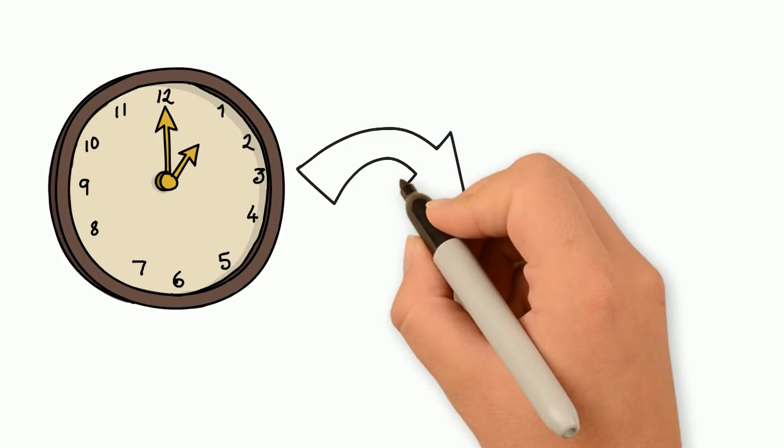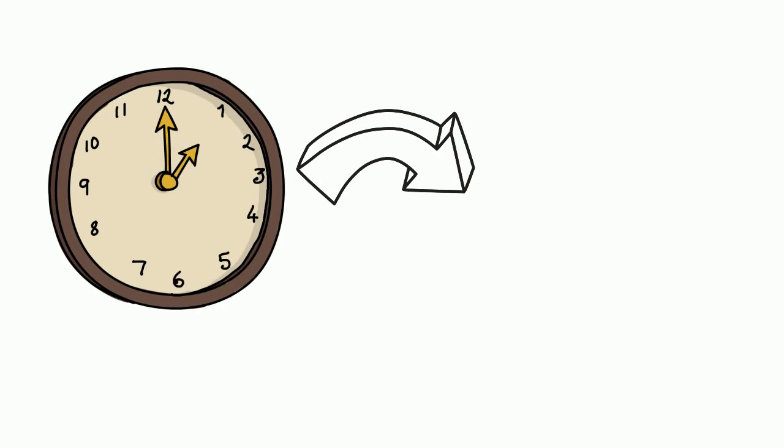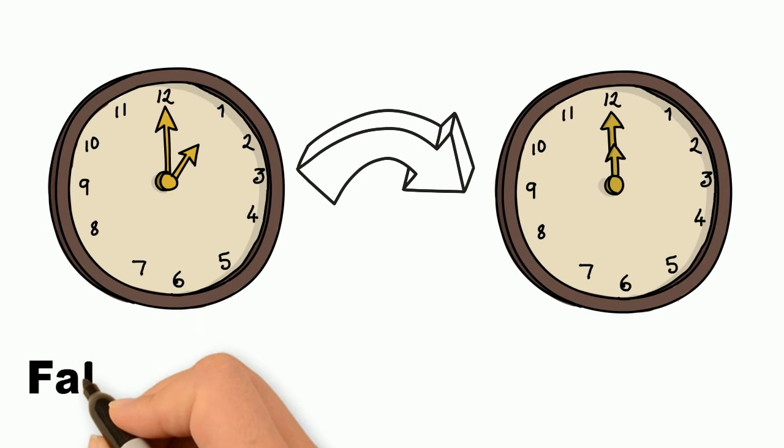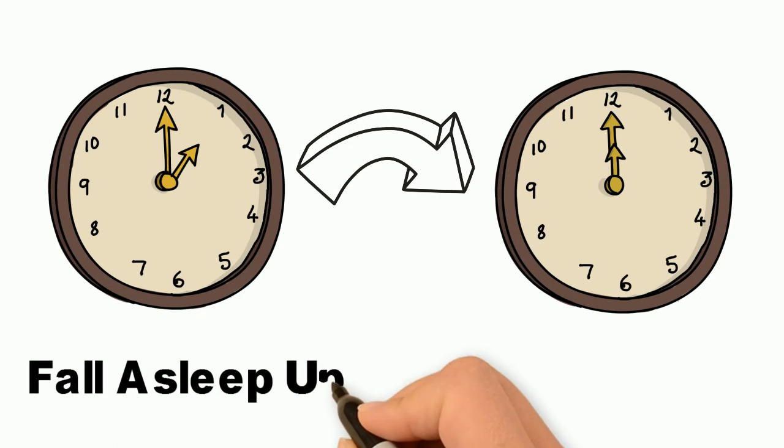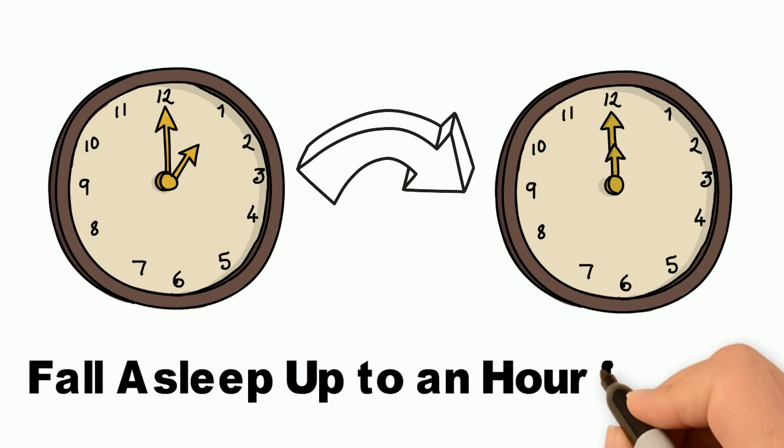In fact, using amber light at night has been demonstrated to shift bedtimes an average of one hour earlier, reduce sleep latency by up to an hour—that's time spent struggling to fall asleep—and improve overall sleep quality.